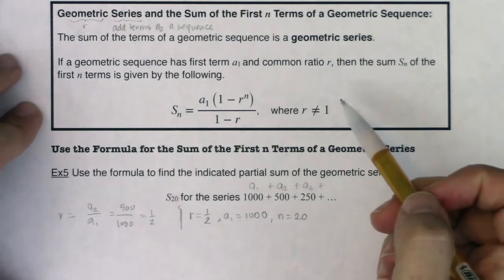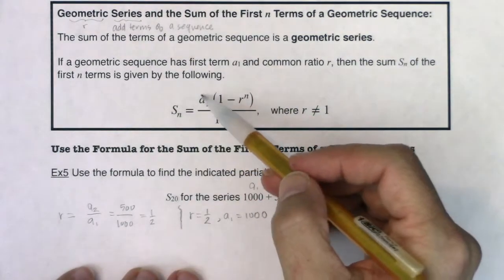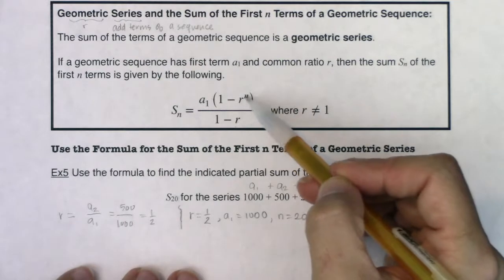And that's great because like always, we have four variables. We have s of n, we have a sub 1, we have r, and we have n.